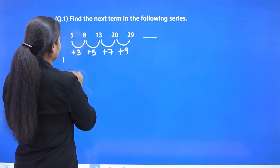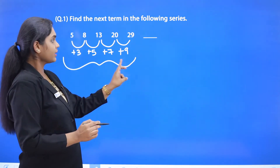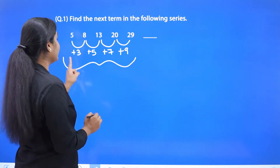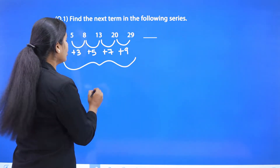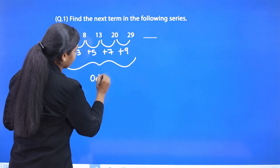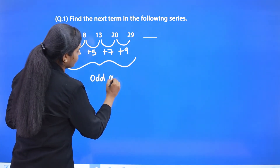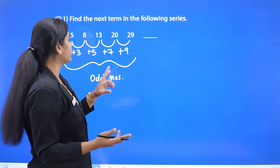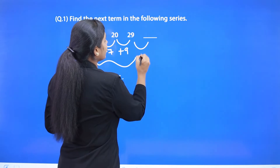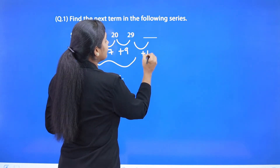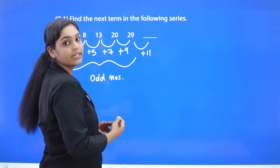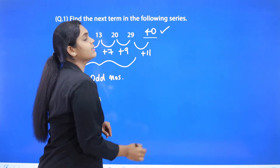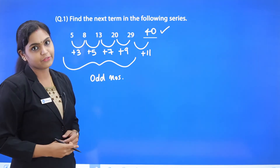When you analyze these difference values — 3, 5, 7, 9 — you can conclude that these are odd numbers. So what can be the next odd number? It is 11. So we do 29 plus 11, which gives us 40. So 40 is the missing value here.